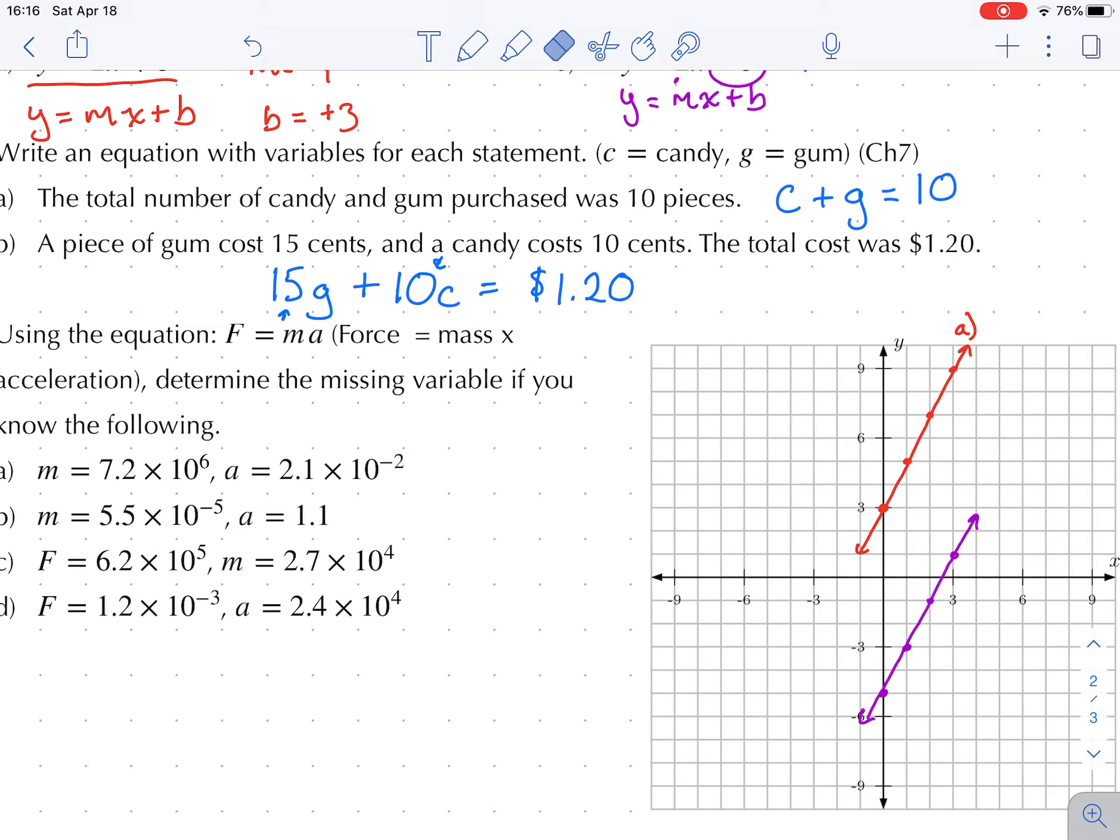So it does not work out. So you have to change either 15 cents into how many dollars it is, or we change $1.20 into how many cents it is. I find it easy to change $1.20 to the amount of cents. $1.20 is 120 cents. So the total cost, instead of $1.20, was 120 cents.